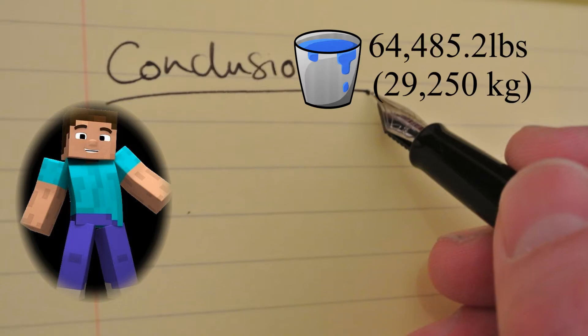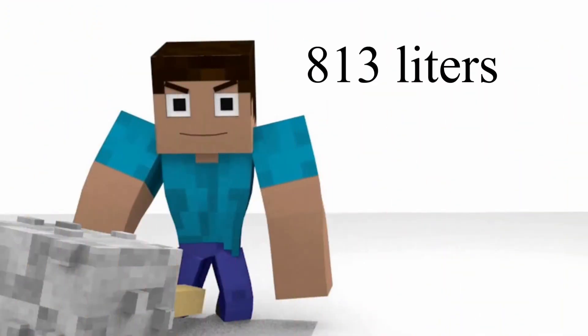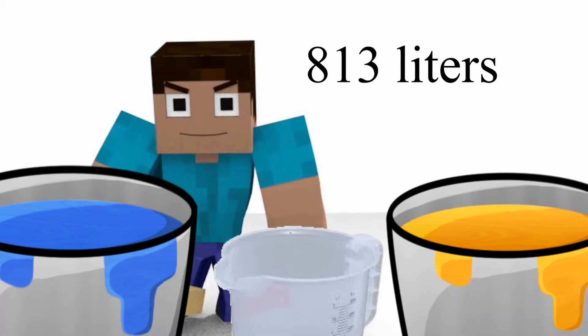So in conclusion, Steve can carry 64,485 pounds of water and about 200,640 pounds of lava. To put the volumes into context, Steve can carry 813 liters worth of water and lava.